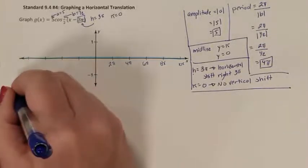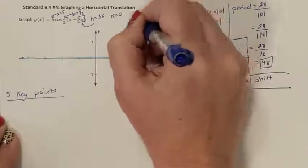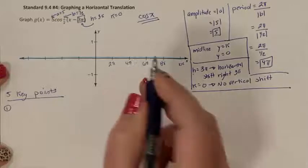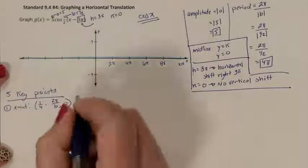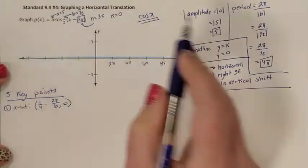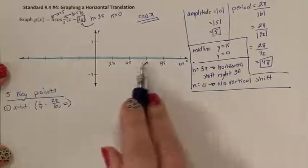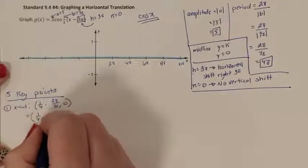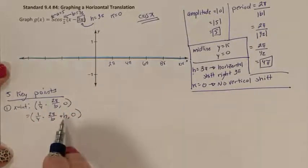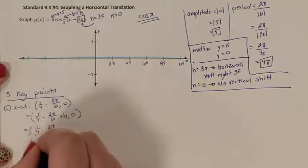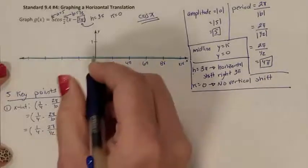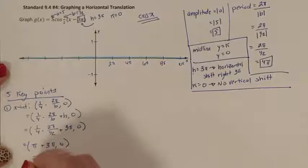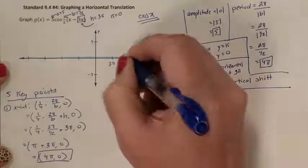Let's go ahead and find our five key points. This is a cosine function — cosine and sine have very different formulas, so keep them separate. Cosine has two intercepts on the midline, which are actually x-intercepts since our midline is the x-axis. Because I'm moving horizontally, my x values need to include the added h. My first x-intercept works out to be 4 pi, 0.